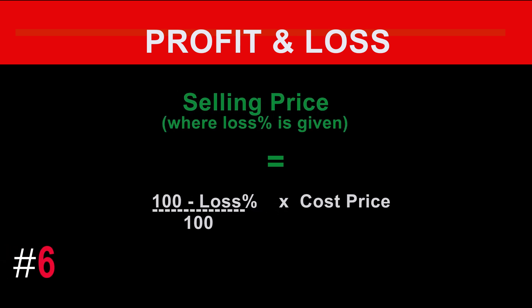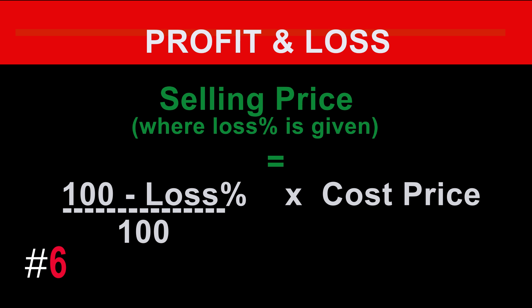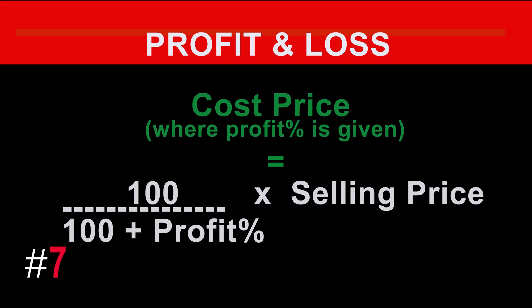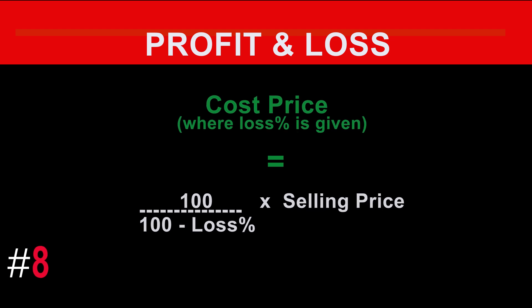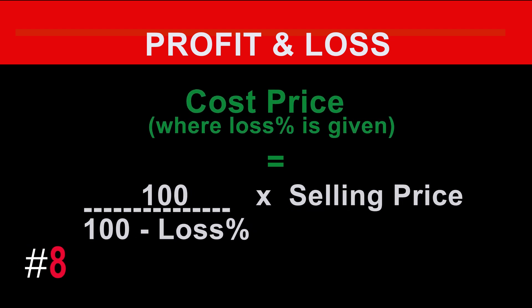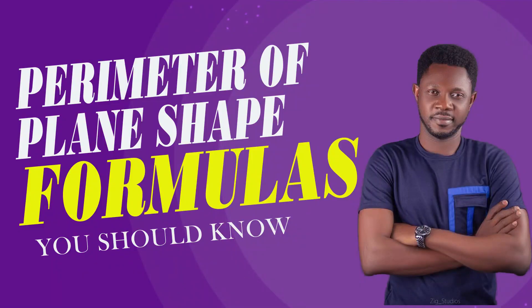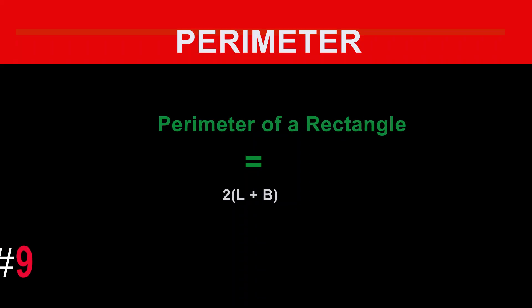The formula for selling price where loss percentage is given is: selling price equals (100 minus loss percent) divided by 100, times cost price. The formula for cost price where profit percentage is given is: cost price equals 100 divided by (100 plus profit percent), times selling price. The formula for cost price where loss percentage is given is: cost price equals 100 divided by (100 minus loss percent), times selling price.